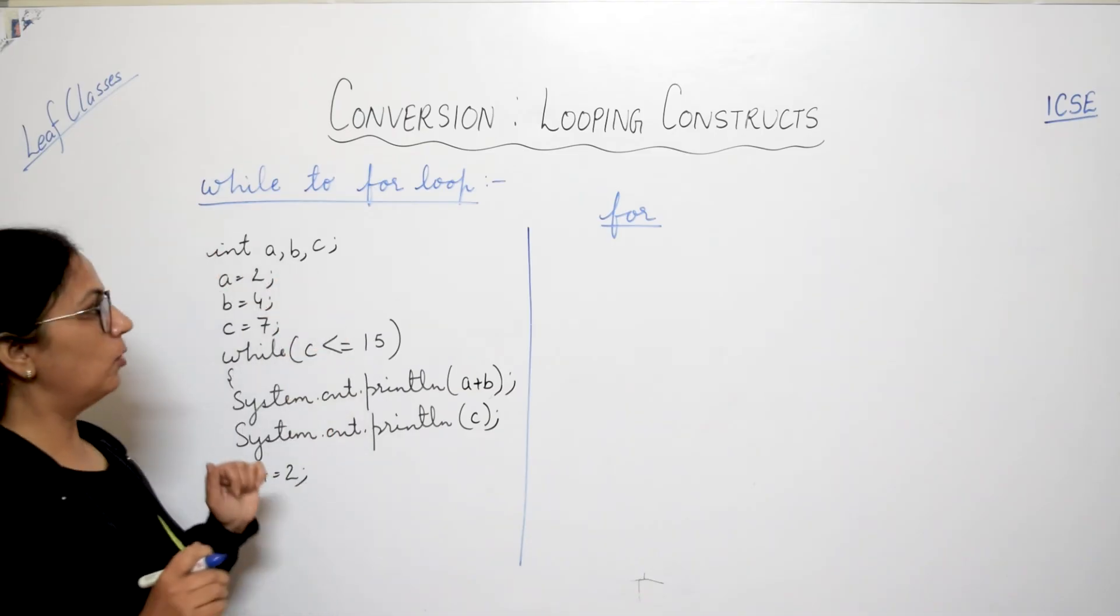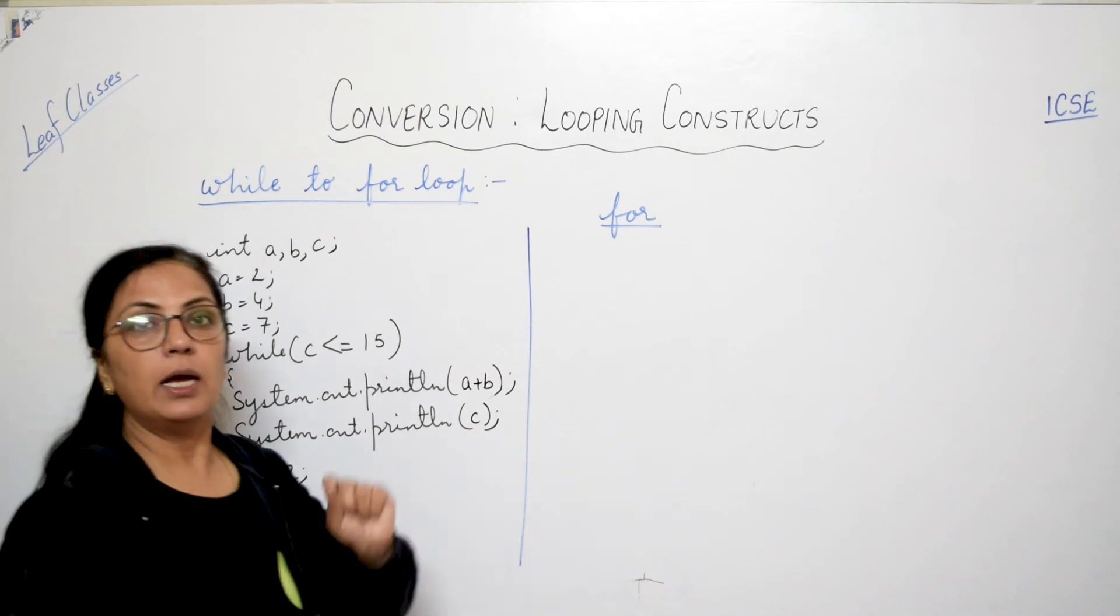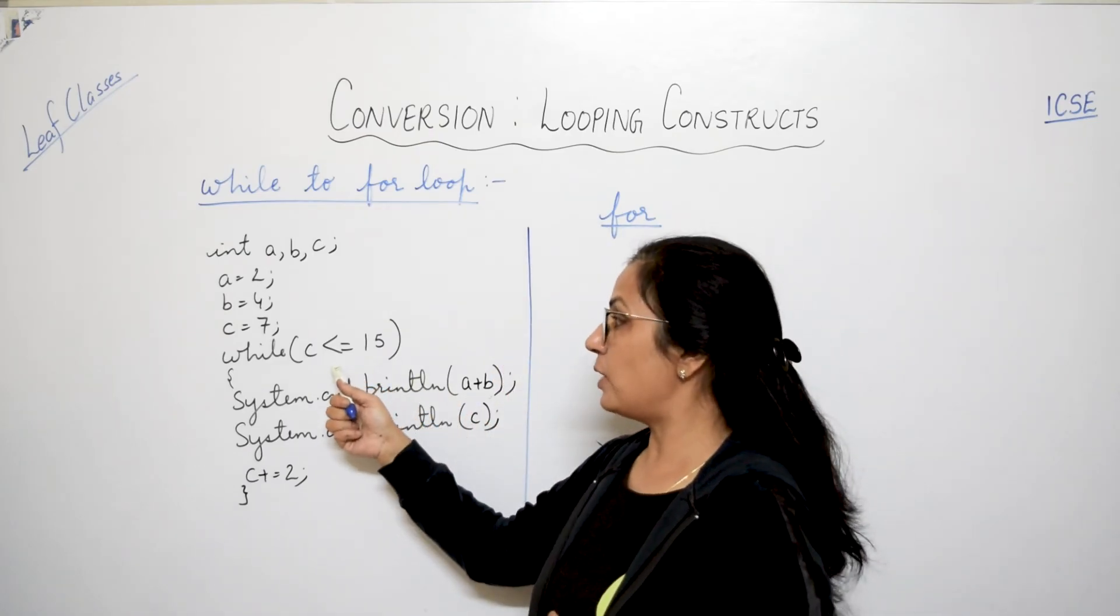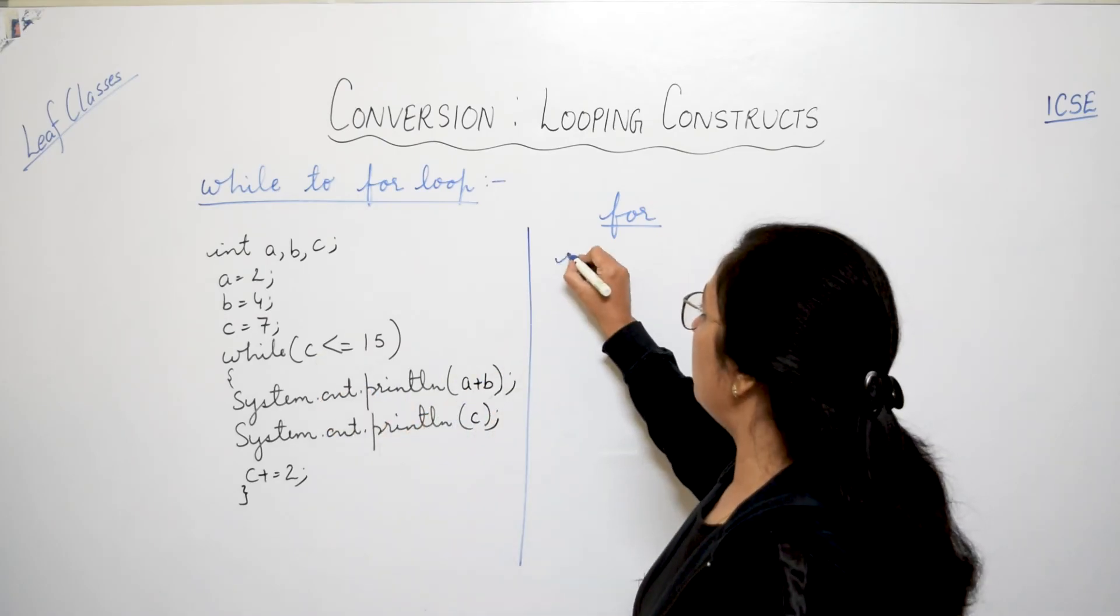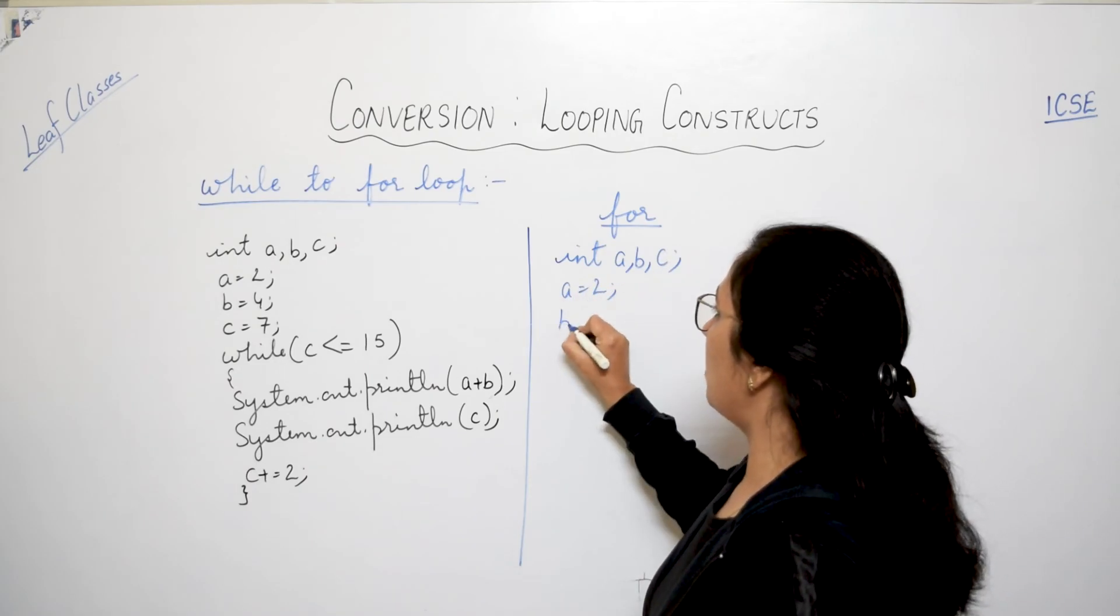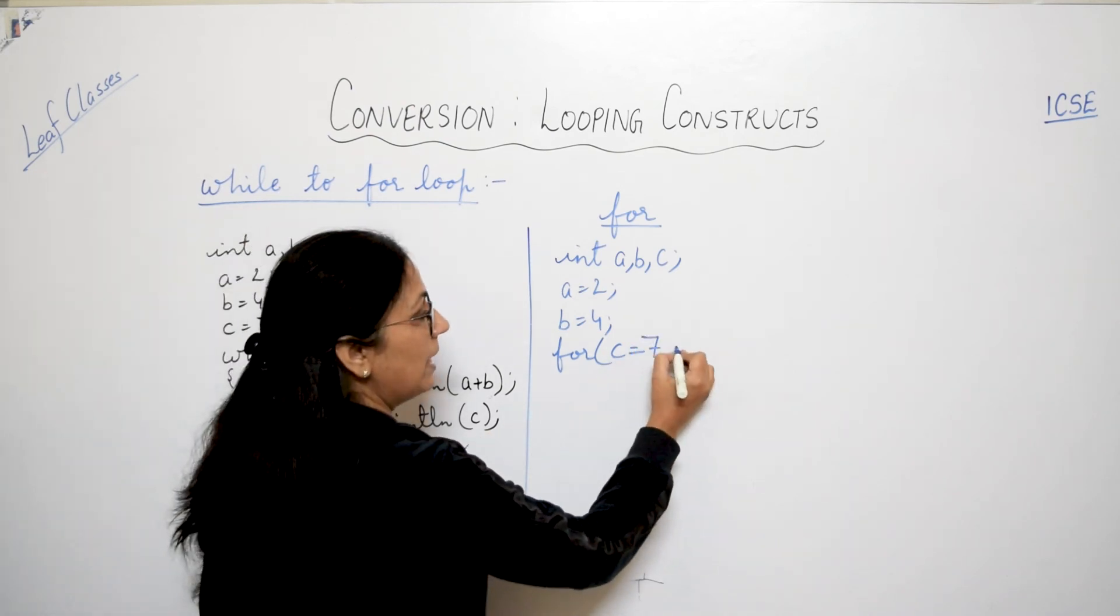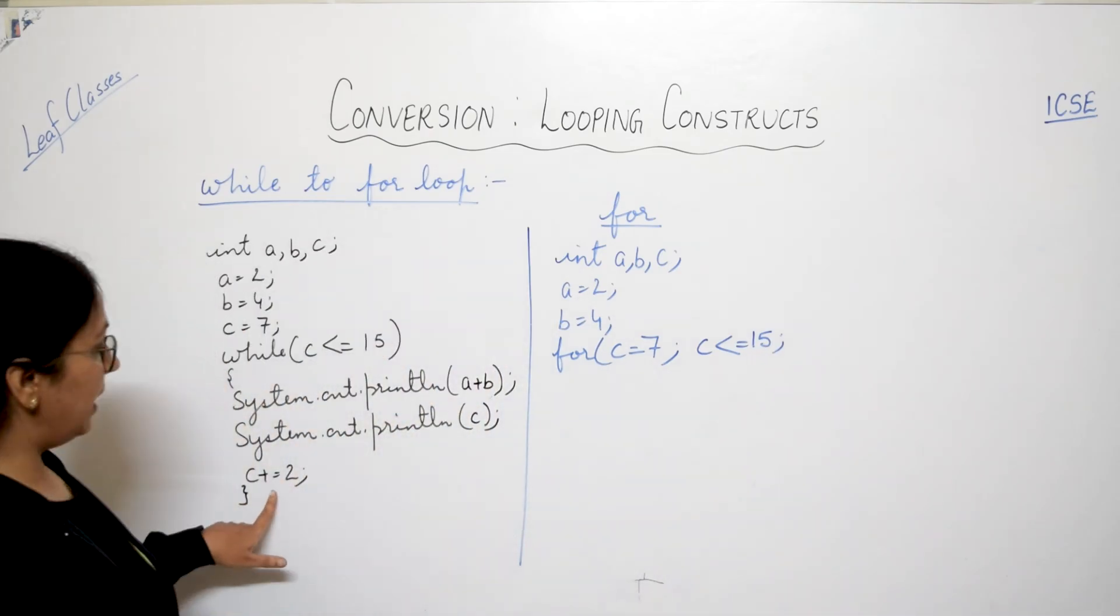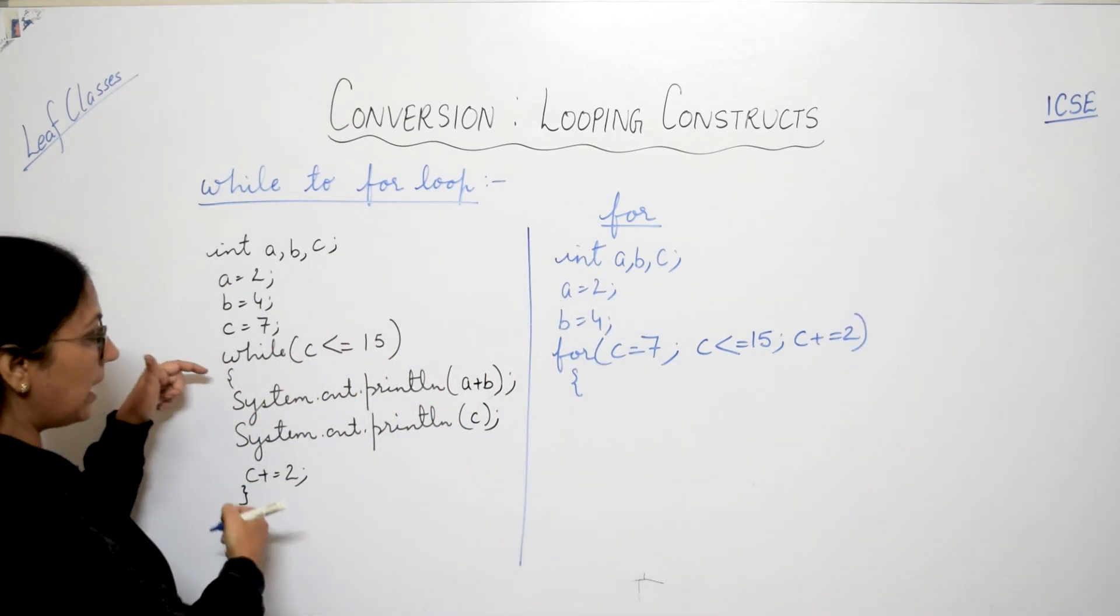Children, one example for while to for loop. int a, b, c, a, b, c values are given, while condition is given and the body of the loop is given. Now in for, in for initialization, test condition and update expressions are given together with for. And first what we have to check, which is the control variable? Because here 3 variables are declared. So here the control variable is c. So what we have to do? Here we have to write int a, b, c here. So here, a equals to 2, b equals to 4, and with for, here you will write c equals to 7. Initialization we have given here. Then test condition is here. So here you will write c less than equals to 15. And what is the update expression? C plus equals to 2. So c plus equals to 2, and then write the entire body of the loop except the update expression.